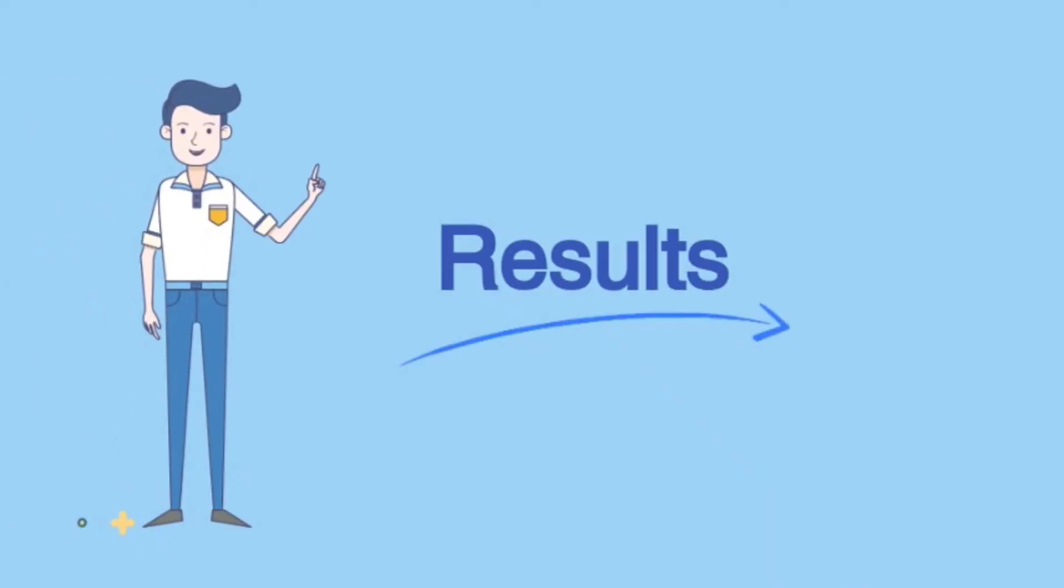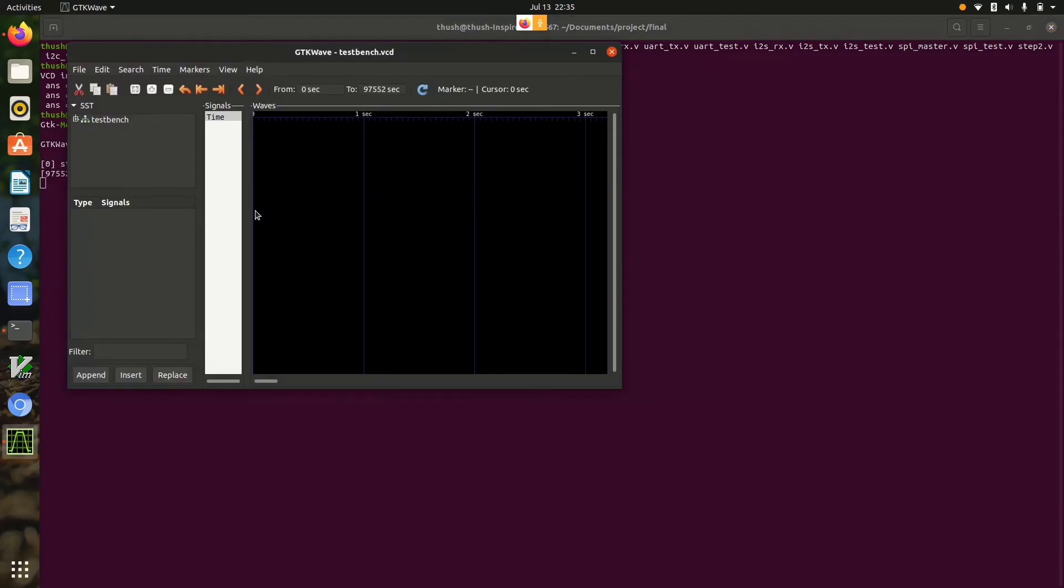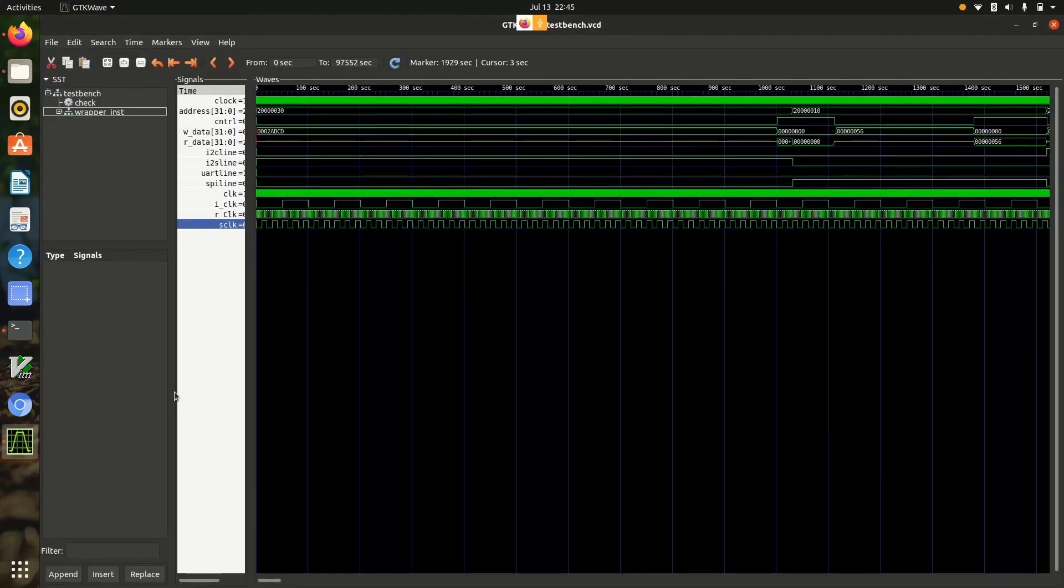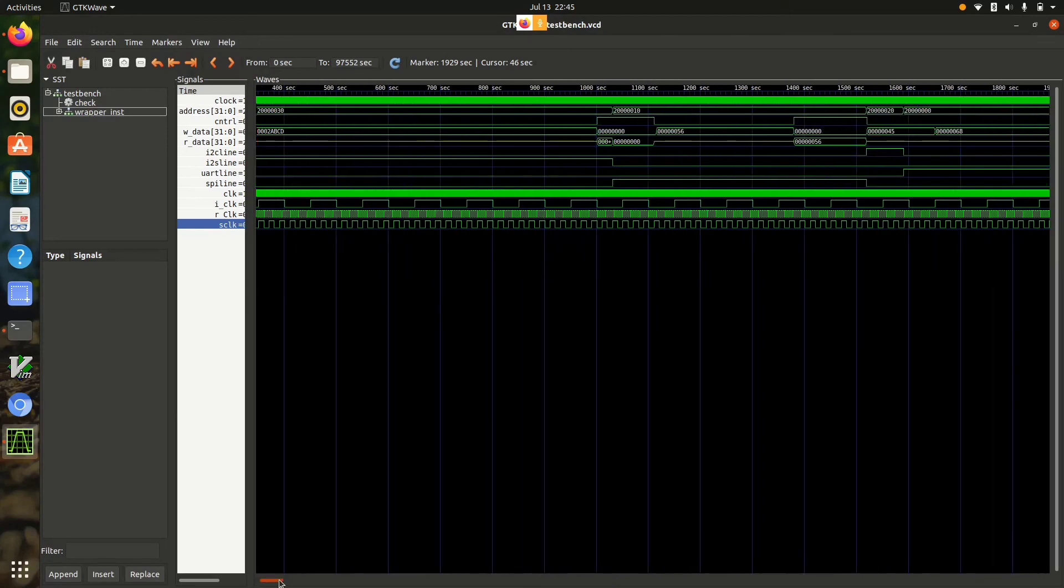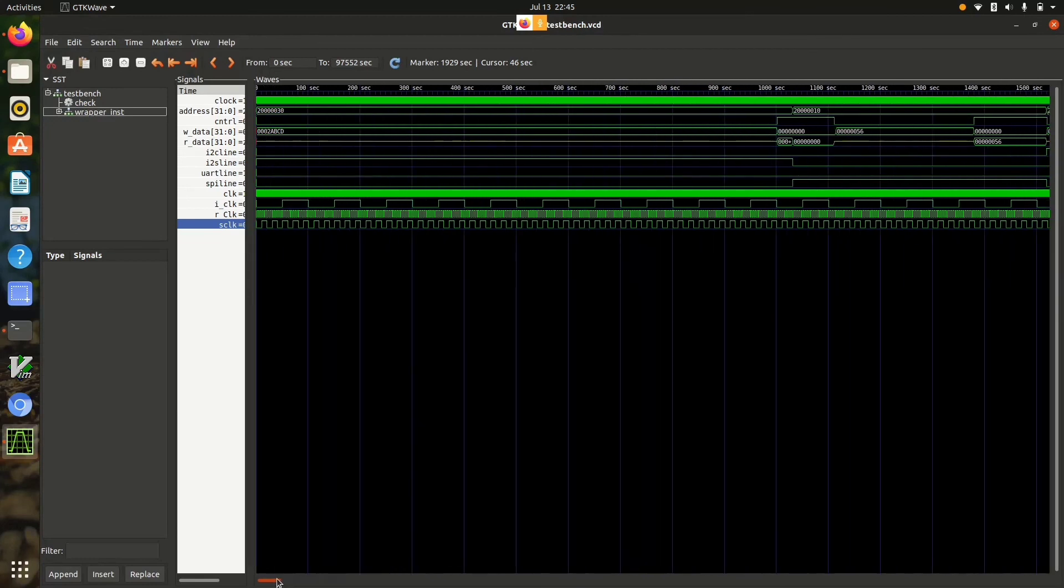Now, let's check out the results. These are the final output waveforms generated in GTK wave. Address, two data lines W data and R data and control signal can be seen. The control signal selects between read and write operation.